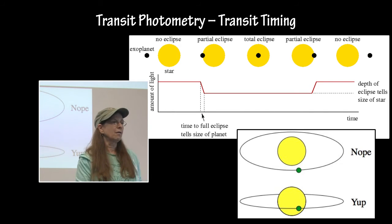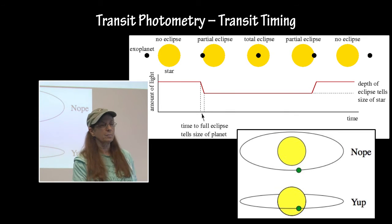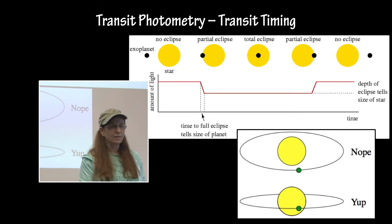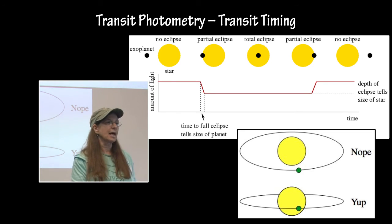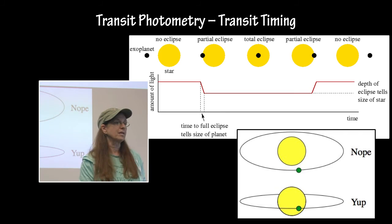Transit timing photometry is only useful if the planet actually eclipses or transits across the surface of its parent star. When it does that, the light decreases, and the time the full eclipse of the planet tells the size of the planet, and the depth of the eclipse tells the size of the parent star.